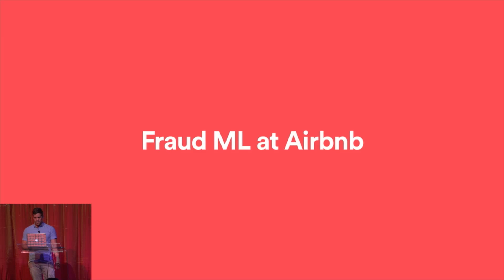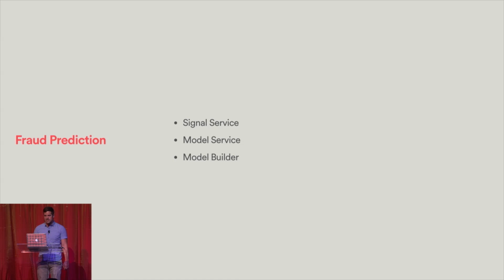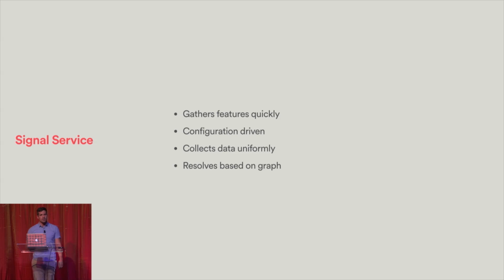So how does this apply at Airbnb? We built a system called the Fraud Prediction Service, which is comprised of three separate components: the signal service, the model service, and the model builder. The signal service is how we collect the features that we use to make predictions in real time. We've determined it's important to make these decisions when they happen so we can stop bad actors before they have any effect on our community — so we need it to be really fast. It needs to be configuration-driven so that people who might not know how to write code can still contribute to the feature set. We collect data uniformly, so it doesn't matter whether it's coming from an external database, a separate service, or a third-party service — it all comes in the exact same way. And it resolves based on graph resolution.